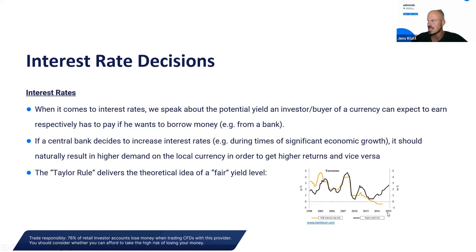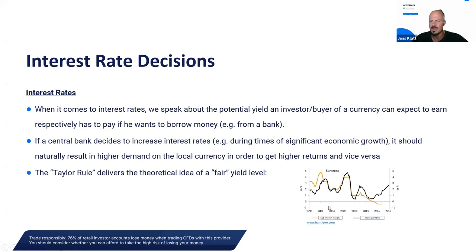This chart from an external source shows the Taylor Rule for the ECB, ending at end of 2019. The black line was already rising, signaling yields should be higher, but the ECB didn't follow. Then there was a sharp pull-in, and for a very long time the ECB held yields too low for too long — which is why they had to hike so aggressively. The same is true for the Fed: rates were far too low for far too long, requiring aggressive hikes to bring raging inflation under control.